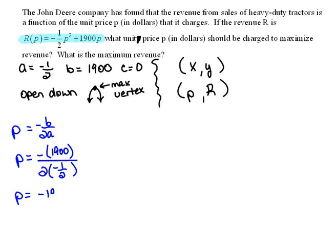And now we just simplify. So we have negative 1900 divided by 2 times negative 1 half is negative 1, which tells us that our price is $1,900. That's our maximum price.